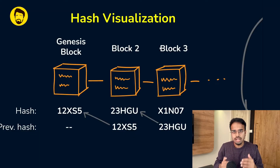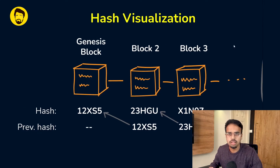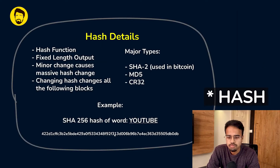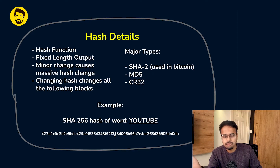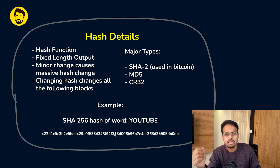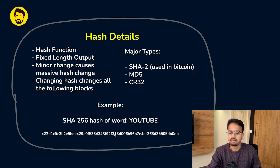Even a minor change — like capitalizing the 'H' or one bit change — can change the entire hash output. Since each block's hash is linked to the next, if you change one, the entire hash of all following blocks in the chain will change. There are a few major types of hash functions: SHA-1, SHA-2 (used in Bitcoin), SHA-256 as a subcategory, MD5, and CRC32. These hash functions are also used to save your passwords — not just in blockchain, but on most major websites and platforms.